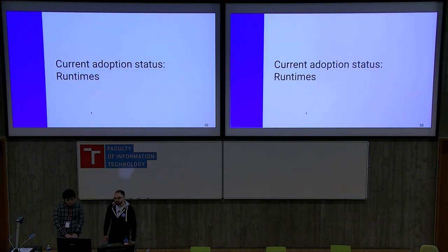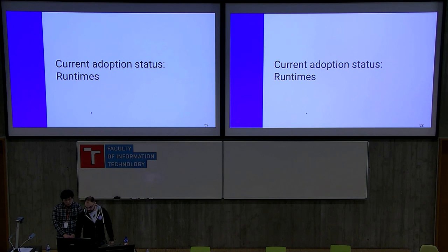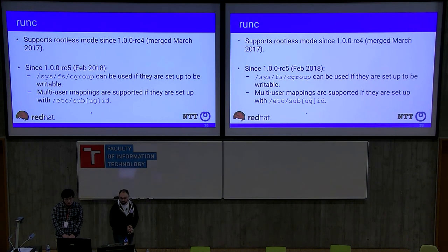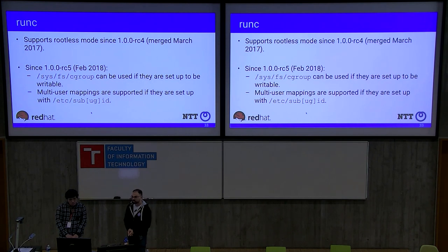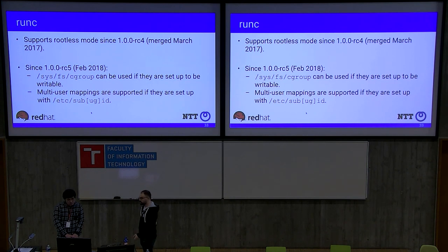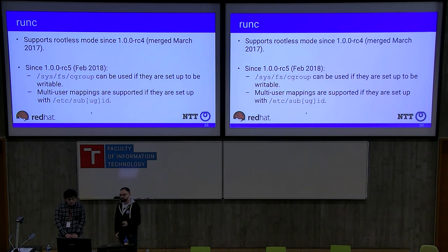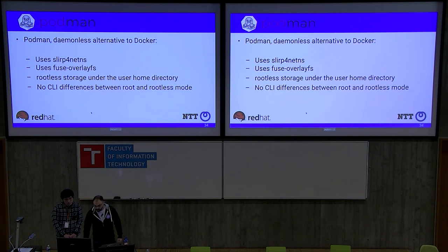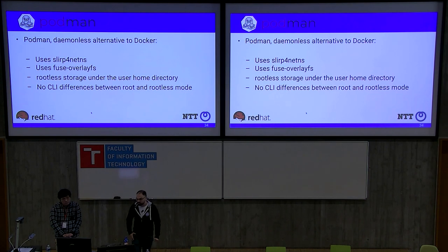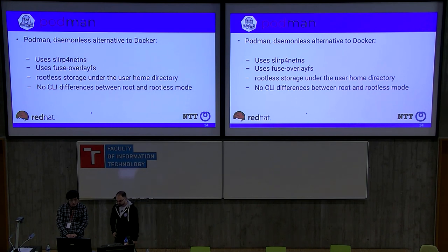Looking at current adoption, starting with runtimes: runc started supporting rootless mode two years ago with basic support — single user, no cgroups. A year later a new release added support for multiple ID maps, and if you make the cgroups path writable, runc will start using it. Podman — the daemonless alternative to Docker — already showed all the nice things you can do with rootless, using fuse-overlayfs for storage by default.